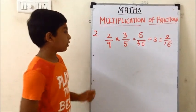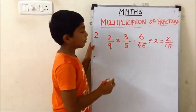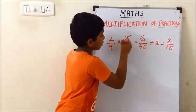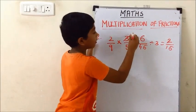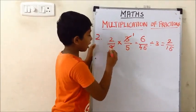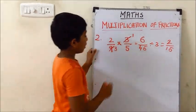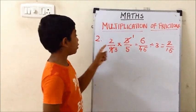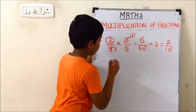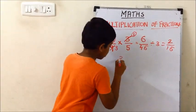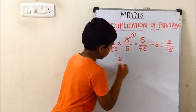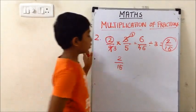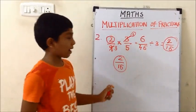This is one method. There is also another method — we can simplify before multiplying. In the 3 times table, 3 comes in the first time and 9 comes in the third time. For 2 and 5 there is no common factor. So we multiply 2 and 1: 2 ones are 2, and 5 threes are 15. The answer is again 2/15. Using both methods we get the same answer.